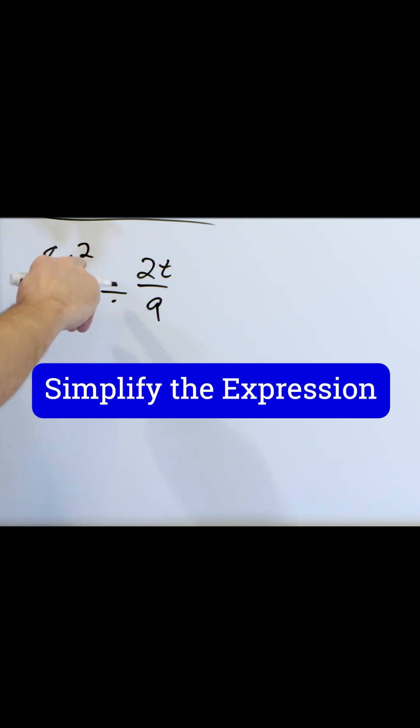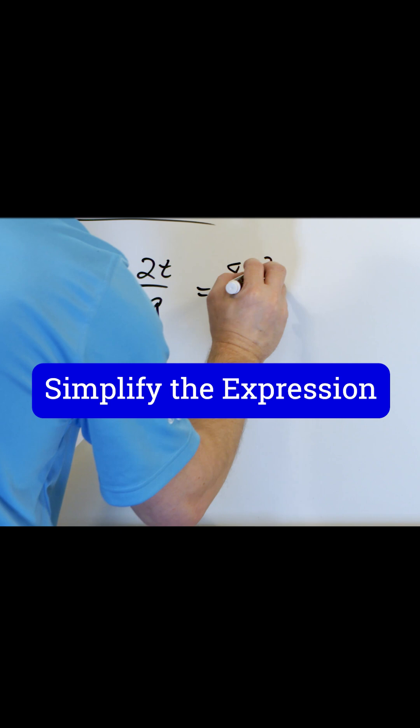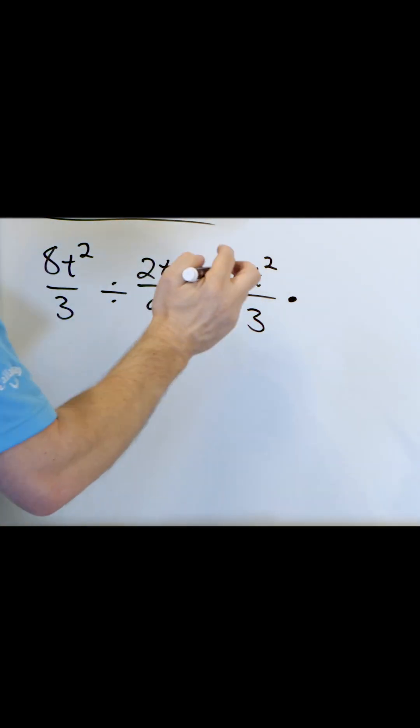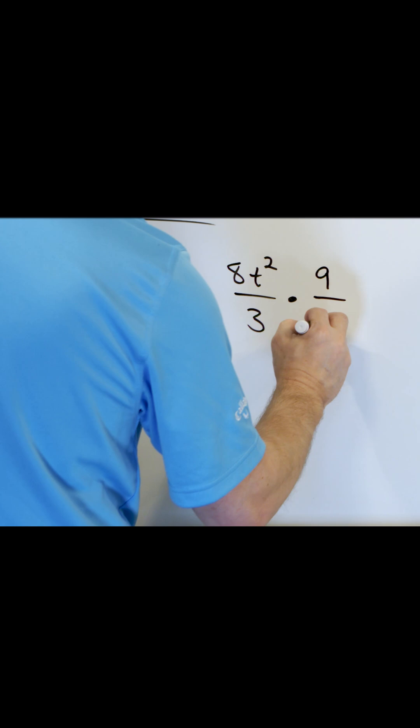Now the first thing you do is realize division can be changed to multiplication. So you have 8t² over 3. We change the division to multiplication, but then we have to flip the second fraction over 9 over 2t.